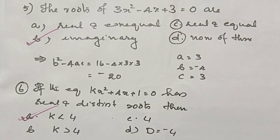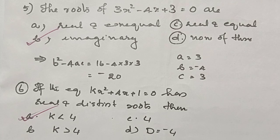The roots of 3x squared minus 4x plus 3 equals 0 are? We have to find the value of b squared minus 4ac, then only we can say what is the nature of the roots. By finding, we get b squared minus 4ac is equal to minus 20. Therefore, the roots are imaginary.